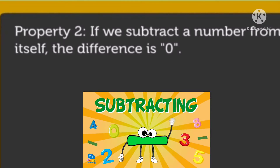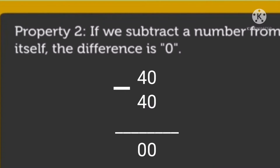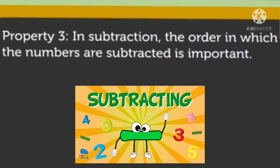...a number from itself, the difference is 0. Example: 40 minus 40 is equal to 0. Property 3: in subtraction...